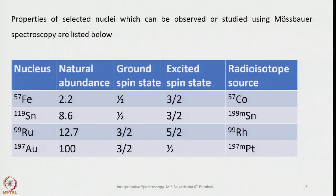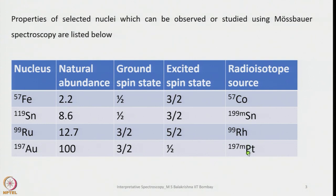Properties of selected nuclei which can be studied using Mössbauer spectroscopy are shown here: 57Fe, 119Sn, 99Ru, 197Au. Natural abundance is 2.2, 8.6, 12.7 and 100. Ground spin state is 1/2, 1/2, 3/2, 3/2 and excited spin states are 3/2, 3/2, 5/2 and 1/2. The radioisotope sources used are 57Co for 57Fe, metastable 119Sn for tin, 99Rh for ruthenium, and metastable 197Pt for 197Au.